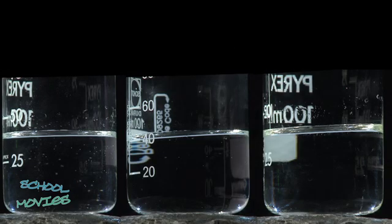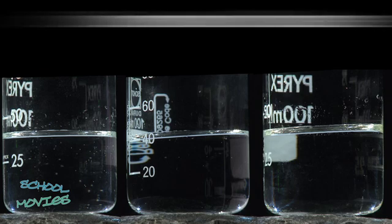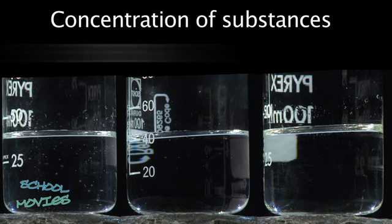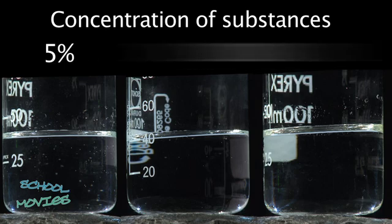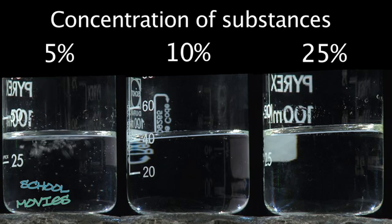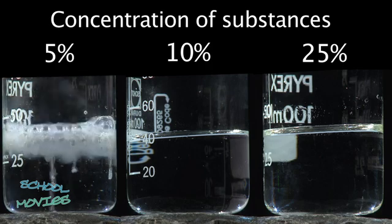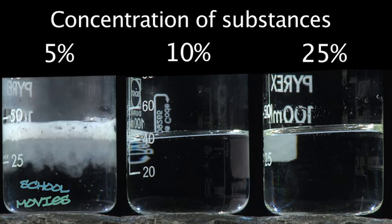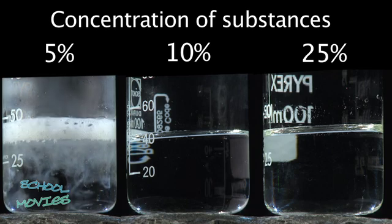Various factors determine how fast a reaction occurs. One of them is the concentration of the substances involved. How the concentration of the substances affects the rate of a reaction can be observed in the reaction of diluted hydrochloric acid with zinc. These three containers are filled with hydrochloric acid in different concentrations. Now the same amount of zinc is placed in each container. Initially, almost nothing is happening in the container with the least concentrated hydrochloric acid.